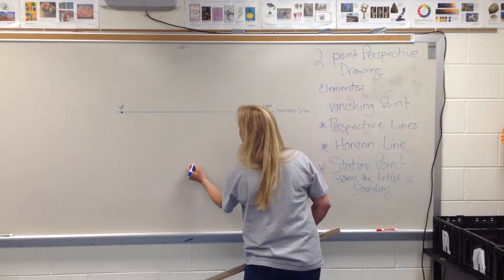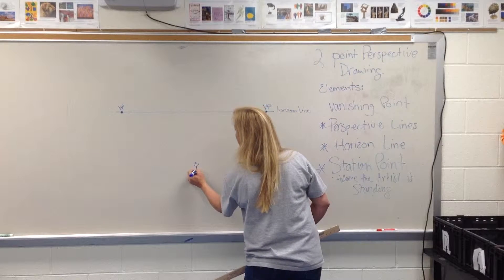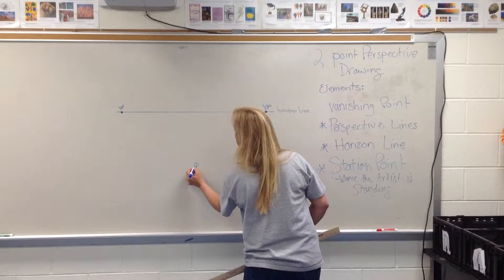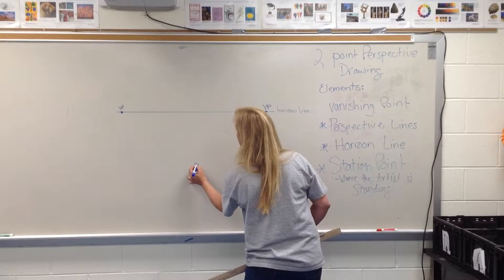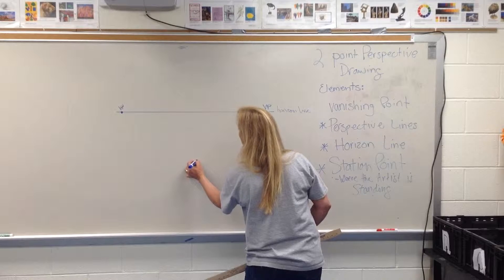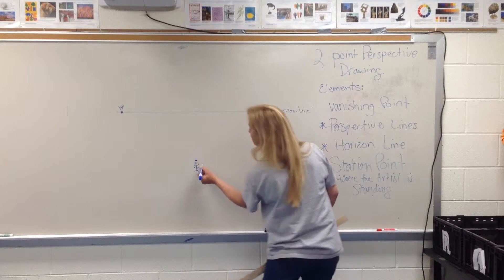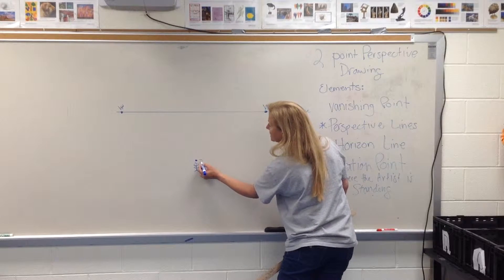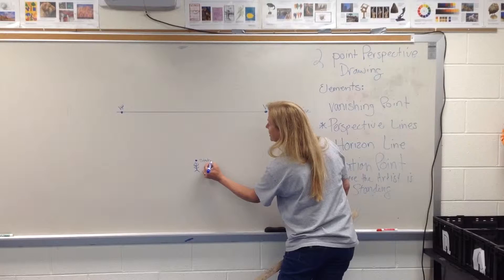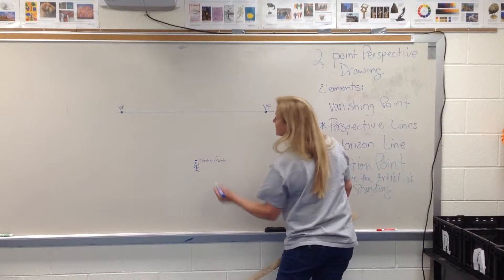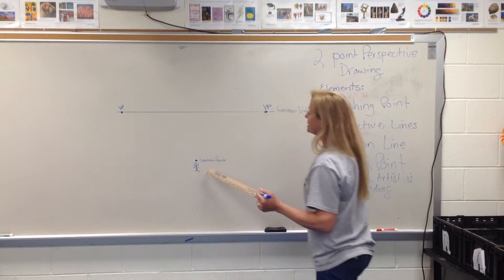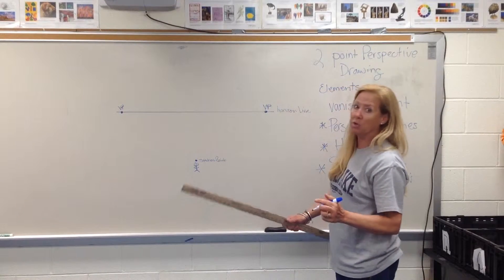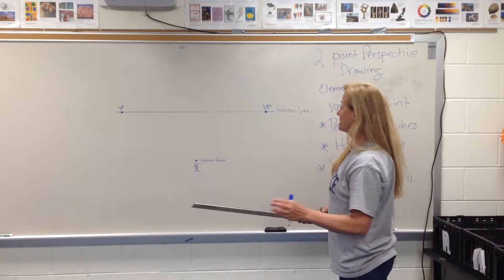The one element that we do not have in one-point perspective drawing is called the station point. This is where the artist is standing. You also need to label this — I can guarantee this is on your quiz, so know what it is.